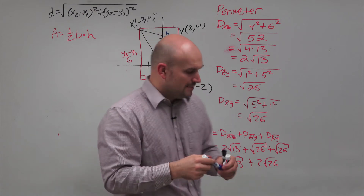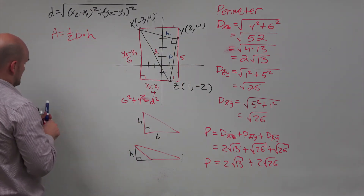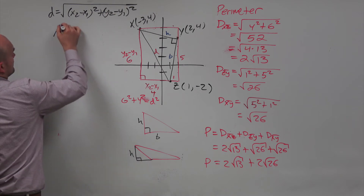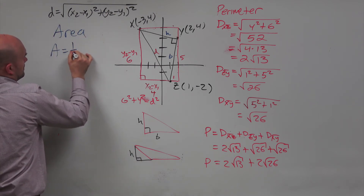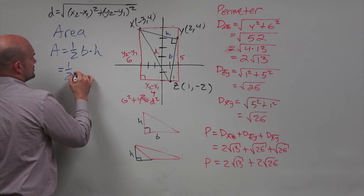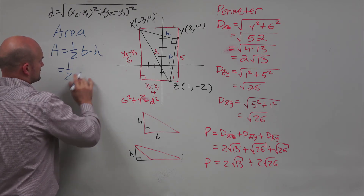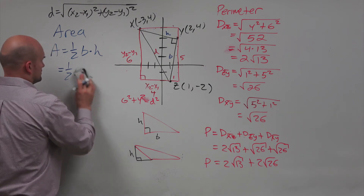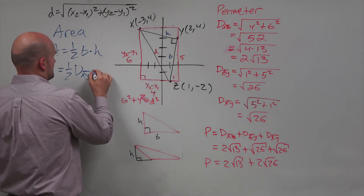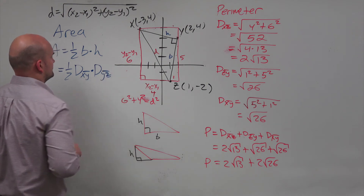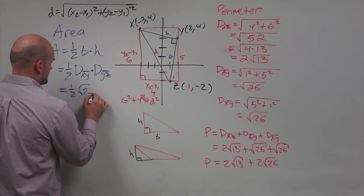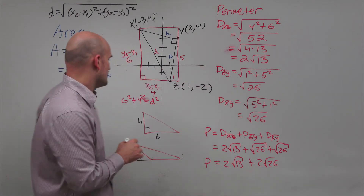When you follow the formula of one half base times height, the area is going to be one half times the distance of xy times the distance of yz. The distance of xy is the square root of 26, and the distance of yz is also the square root of 26.